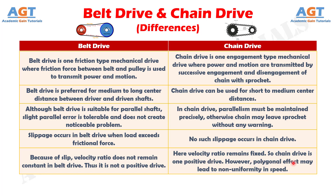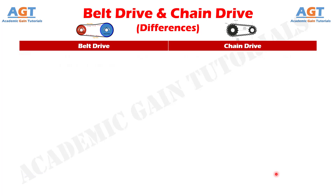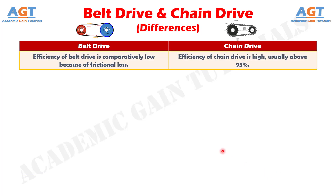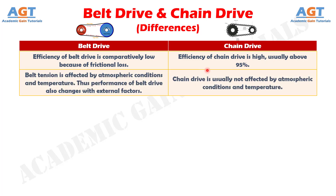However, the polygonal effect may lead to non-uniformity in speed. Number 6: Efficiency of belt drive is comparatively low because of frictional loss. Whereas, efficiency of chain drive is high, usually above 95%.